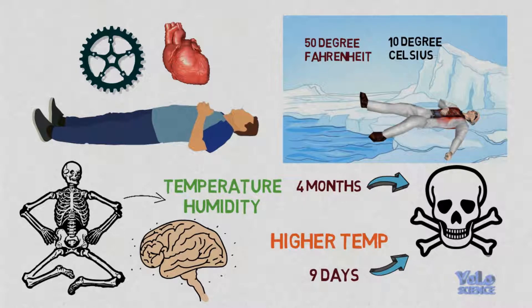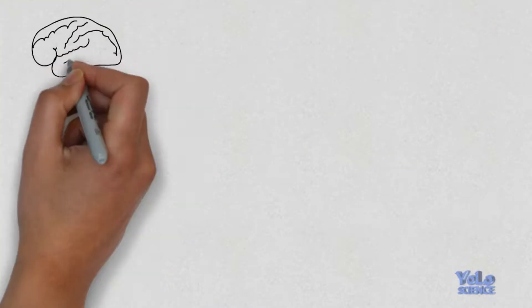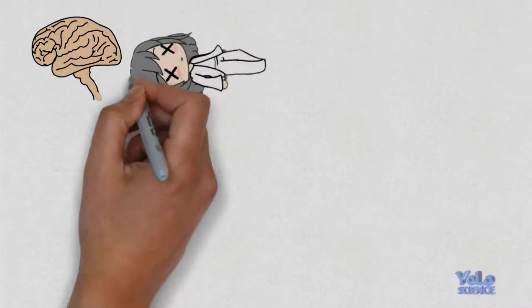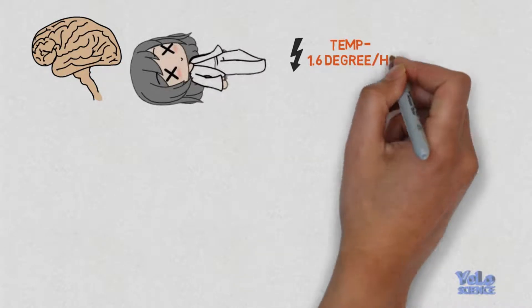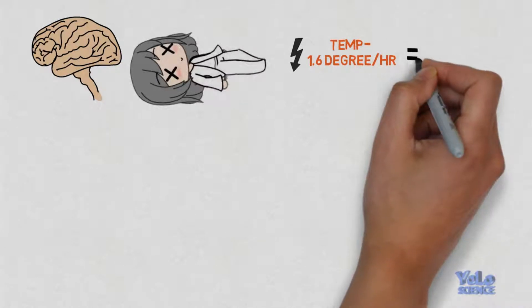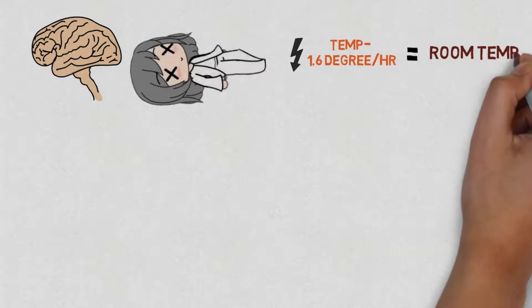Within seconds of death, brain activity increases rapidly and then it stops suddenly. As soon as the brain is stopped, the body temperature starts to fall at the rate of 1.6 degrees per hour until it becomes equal to room temperature.